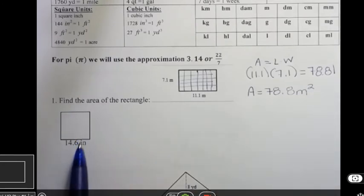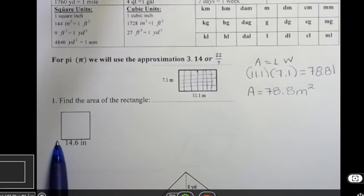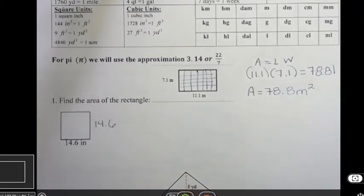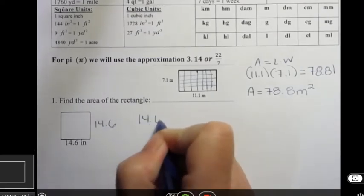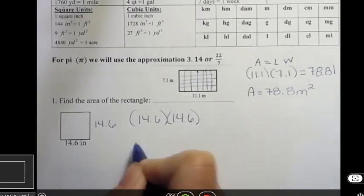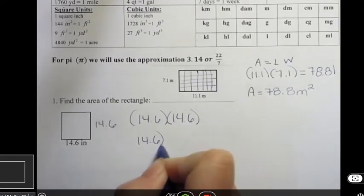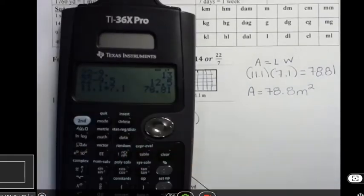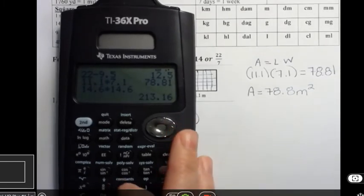What if we had a square? Well, a square is really just a rectangle in disguise. And if it's a square, then all four sides are the same. So if one side is 14.6, then the other side is also 14.6. And I would take 14.6 times itself, and I could write that as 14.6 squared. Either way, it doesn't matter. We're going to get the same answer. So if I take 14.6 times 14.6, I get 213.16.